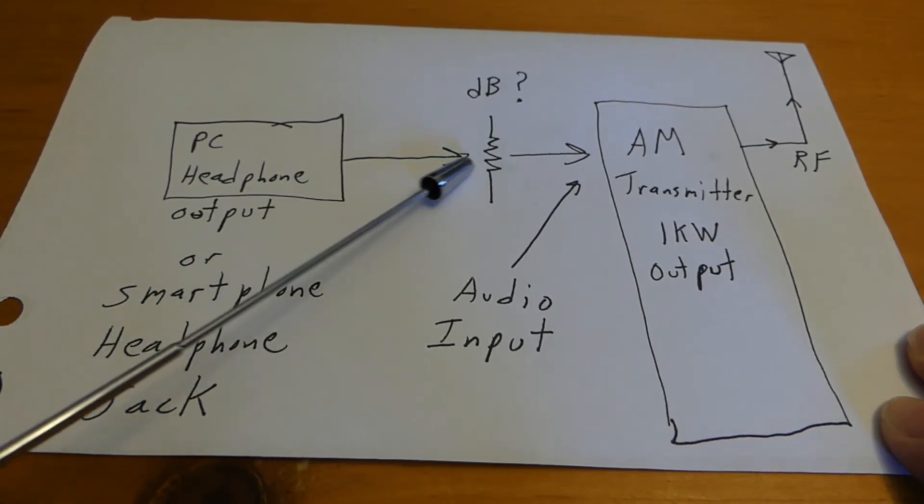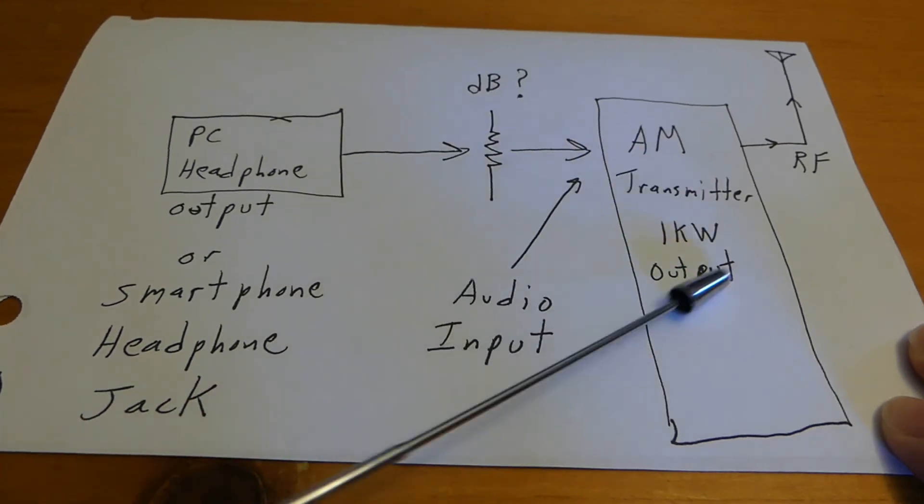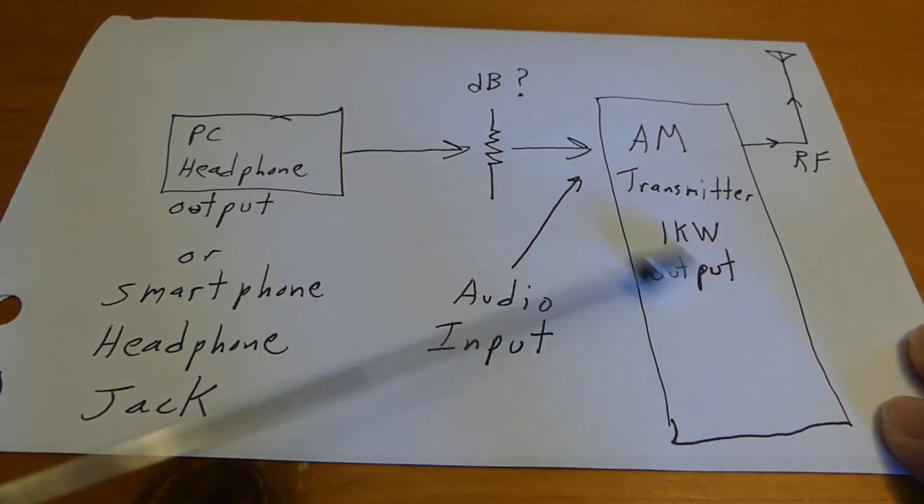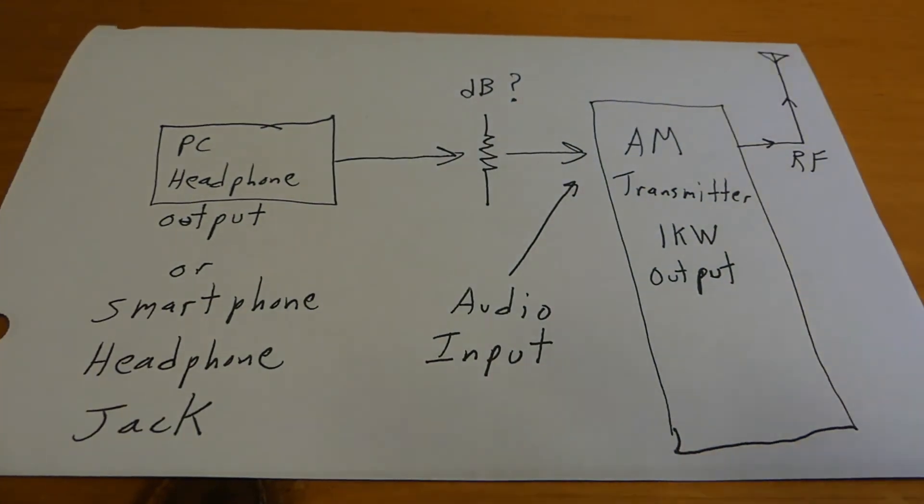You may want to adjust this level here to match whatever level your old AM transmitter wants and you're going to be good to go to broadcast one kilowatt of spectral images for the whole world to see on their SDR radios.